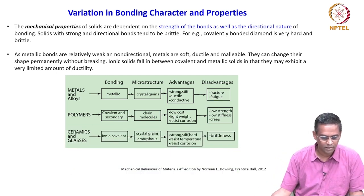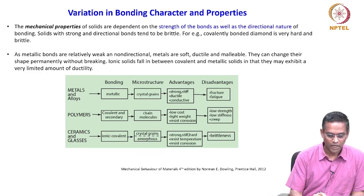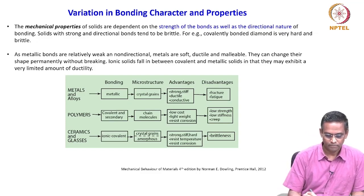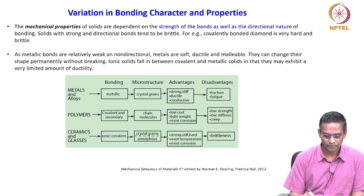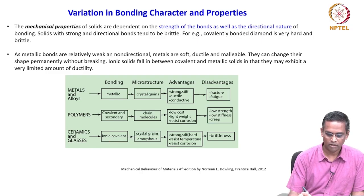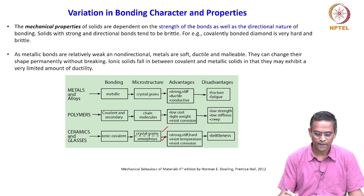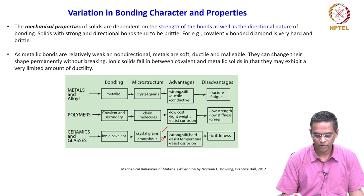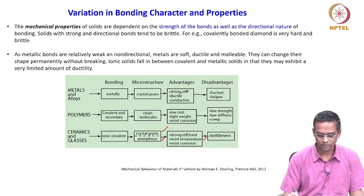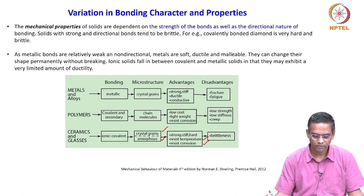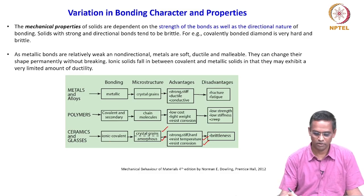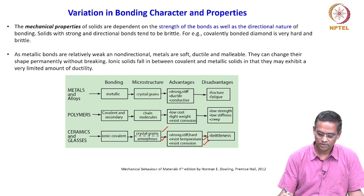Ceramics and glasses have ionic bonds, covalent bonds, or both. They can be polycrystalline, semicrystalline, or amorphous in nature — both microstructure states are possible. Advantages include being strong, stiff, hard, resistant to high temperatures, and resistant to corrosion — all very attractive properties from an engineering point of view. Disadvantages: they are highly brittle.